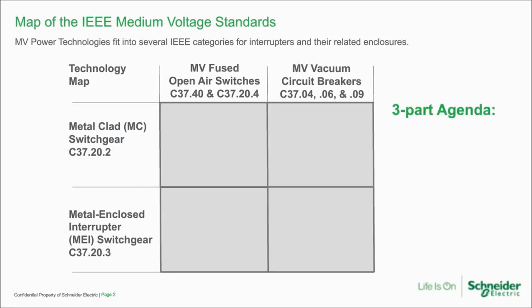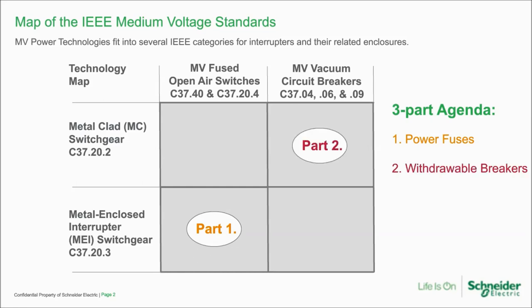A three-part agenda: first, we're going to start in the bottom left with power fuses — that will be part one. Then we'll move to withdrawable breakers in the upper right box. These are the two traditional areas of the map where most specs are written around. Finally, we'll move into what's new — stationary breakers in the lower right box.